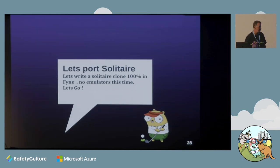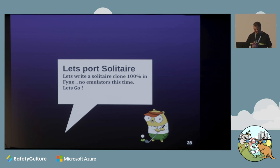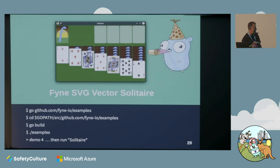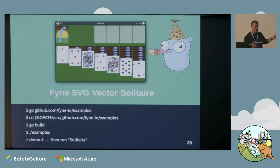One last quick one - this one's fairly important. This is using the SVG features built into Fyne. This took us a lot of work to get right. It was very quick to get Solitaire working, but to make it work well probably took a few months of late nights.